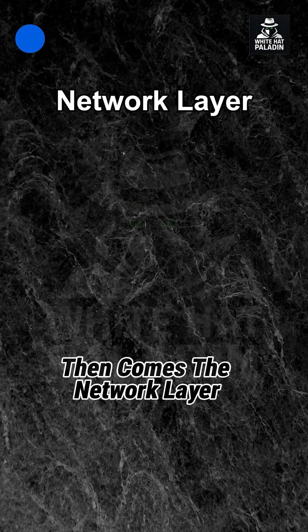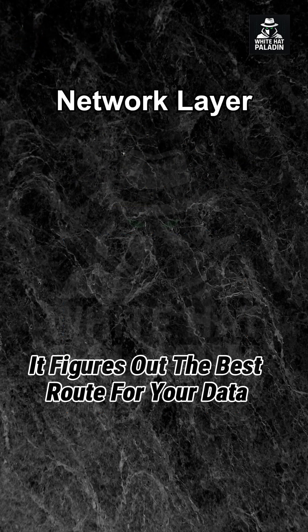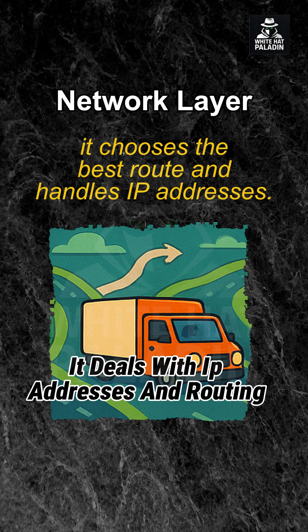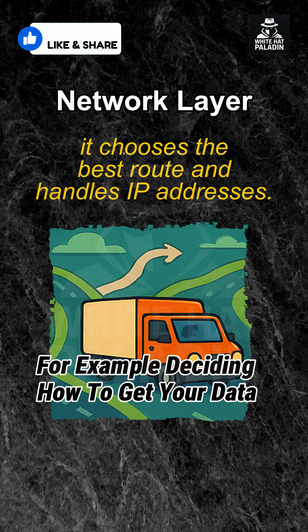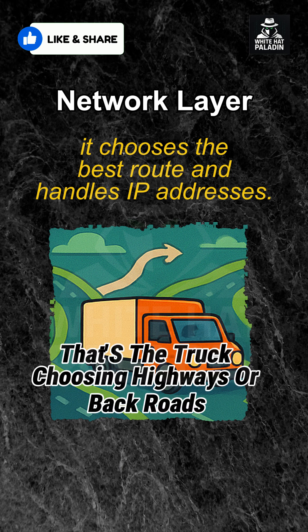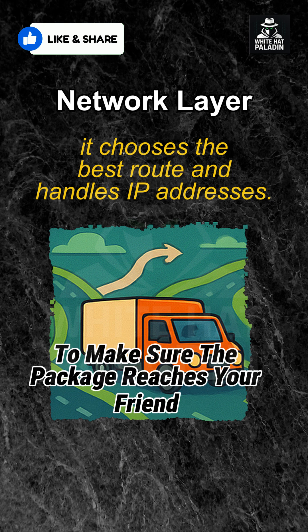Then comes the network layer. It figures out the best route for your data, dealing with IP addresses and routing. For example, deciding how to get your data from Sri Lanka to a server in another country. That's the truck choosing highways or back roads to make sure the package reaches your friend.